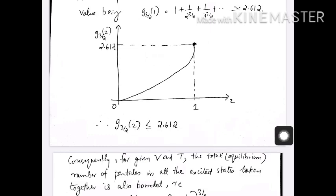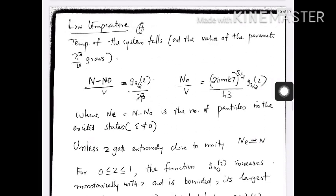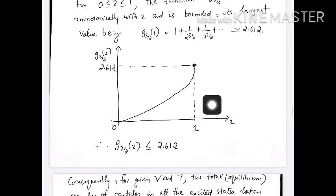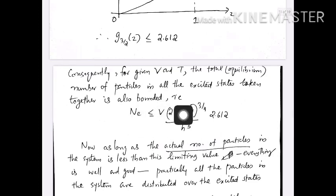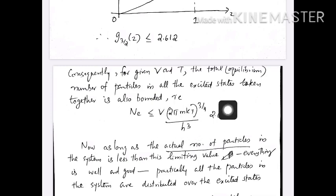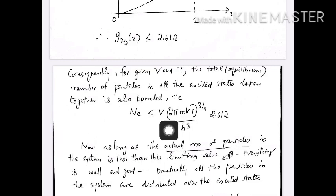Therefore g₃/₂(z) is always less than or equal to 2.612 for the Bose gas, because the maximum value z can take is 1 and g₃/₂(1) = 2.612. From the equation for N − N₀, substituting this maximum value, the number of particles in the excited states N_e is less than or equal to V(2πmkT/h²)^(3/2) × 2.612 at a given temperature and volume.